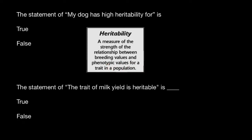So when we're talking about an individual — 'my dog' refers to an individual dog — the statement 'my dog has high heritability for...' is a false statement, because heritability is a property of the population and not of individuals.